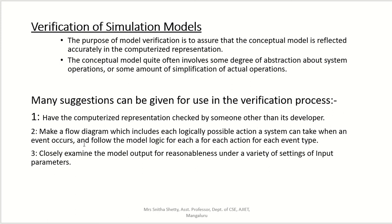They are given around eight suggestions for how verification can be done. First: have the computerized representation checked by someone other than its developer. The developer alone may not identify all mistakes, but a third person comparing it will find mistakes in a more effective way — possibly identifying errors the developer missed. This is similar to alpha test and beta test in software engineering.